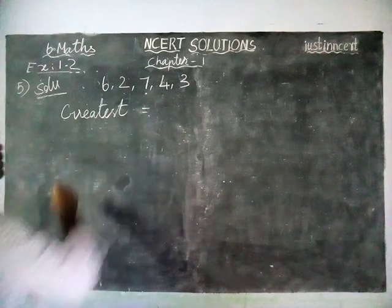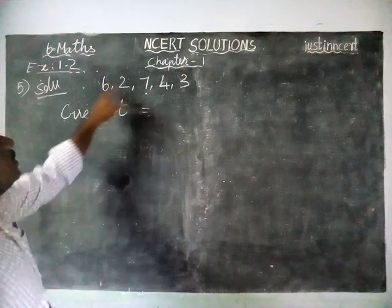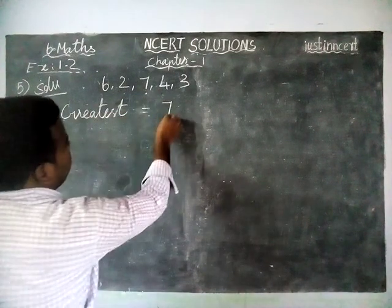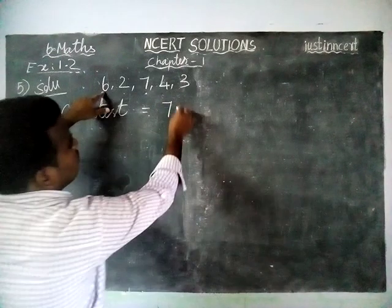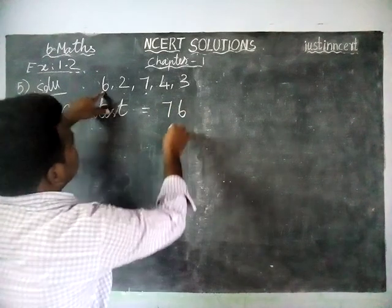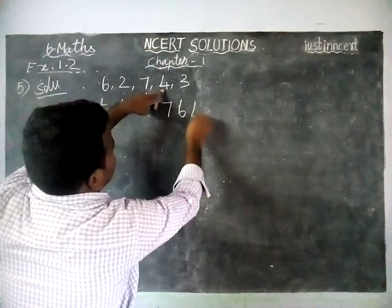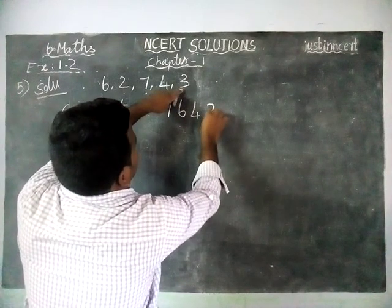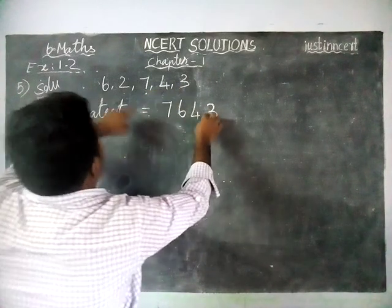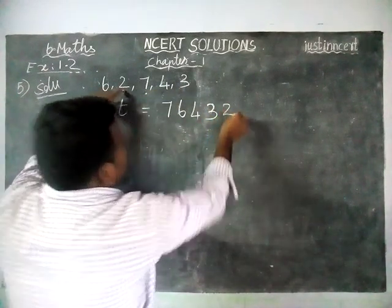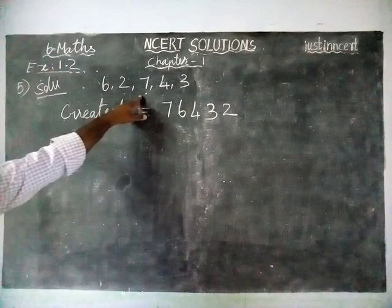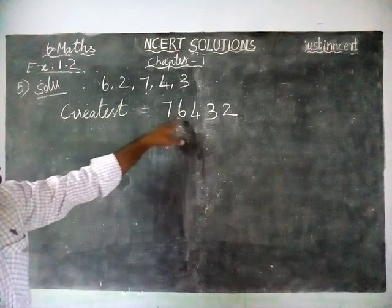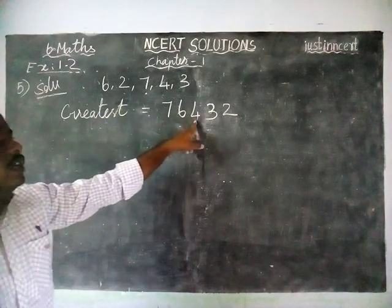For the greatest number, the greatest digit is 7. The next greatest digit is 6, then 4, then 3, and the last — smallest — digit is 2. So by using the given digits, we can make the greatest number: 76,432.